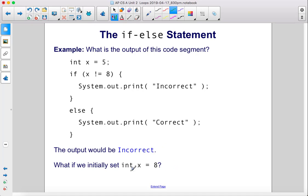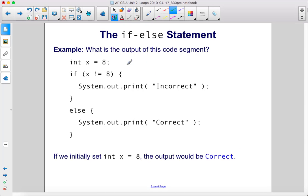What if we initially set int x equal to 8? What is the output of this code segment? Int x equals 8. If x does not equal 8, well, this is false. Therefore, we're going to go to the else and we'll execute this statement. So if we initially set int x equal to 8, the output would be correct.